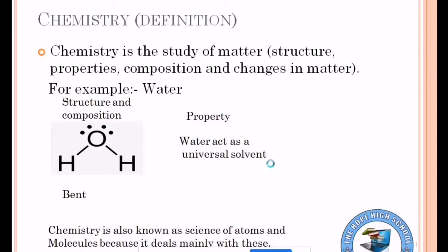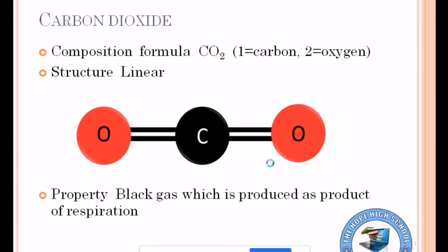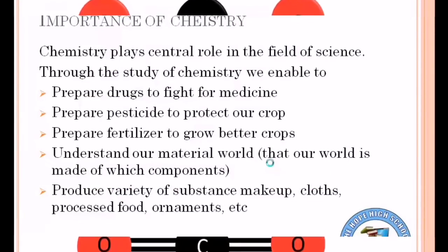If we talk about carbon dioxide, its structure is linear — which means it is straight, and the carbon and oxygen are in the same direction. Carbon dioxide has a common use in respiration and is also commonly used as a coolant.